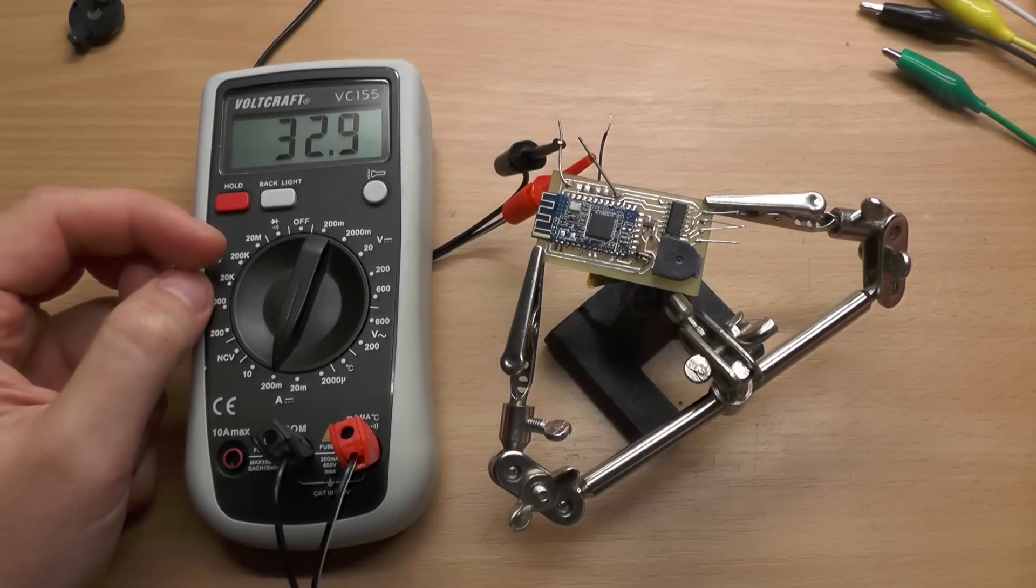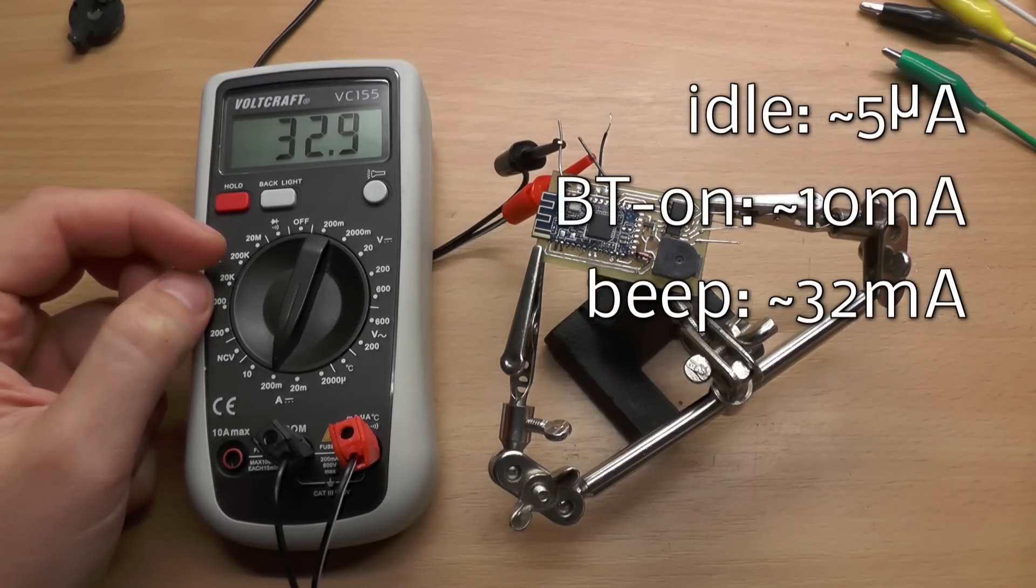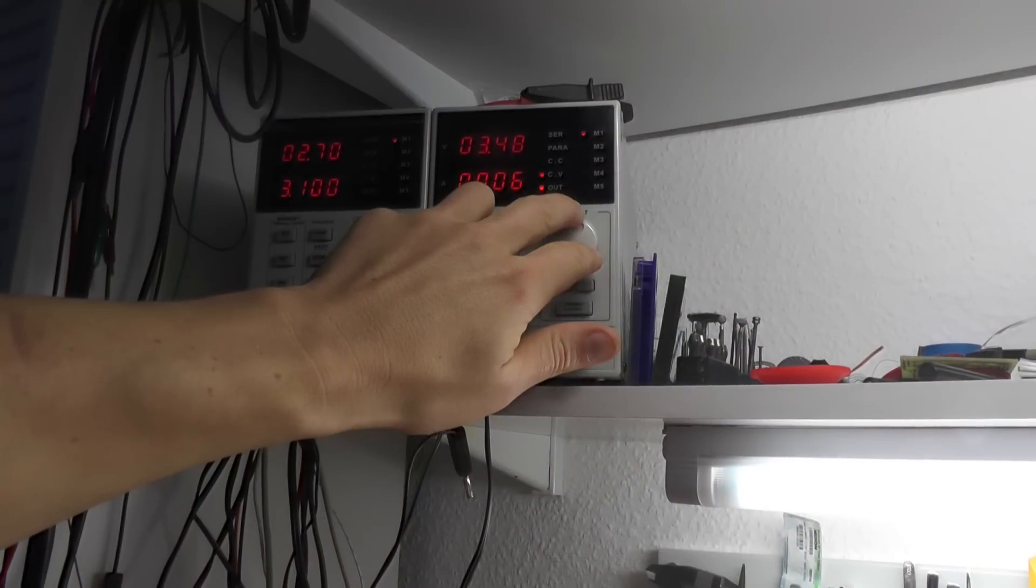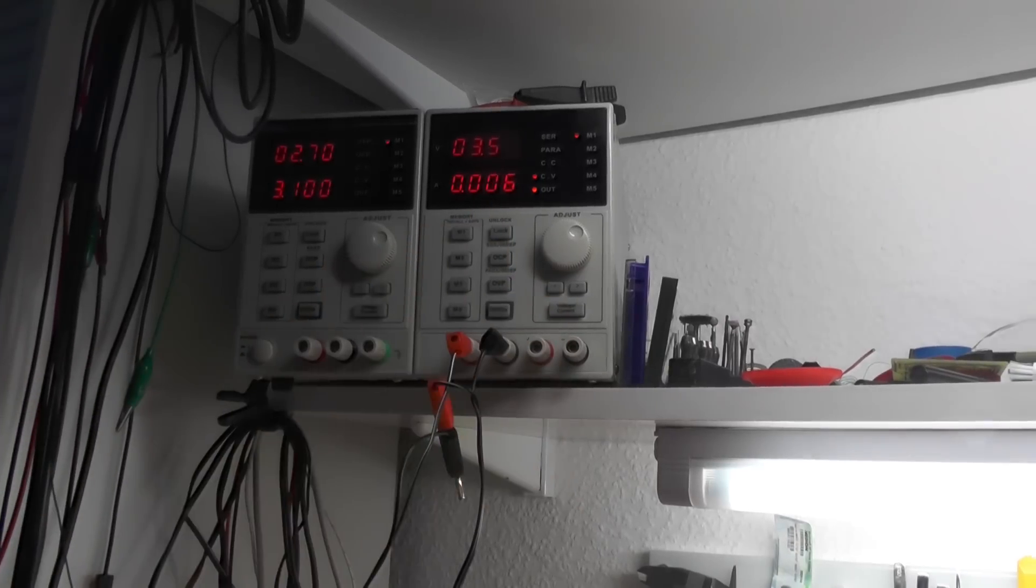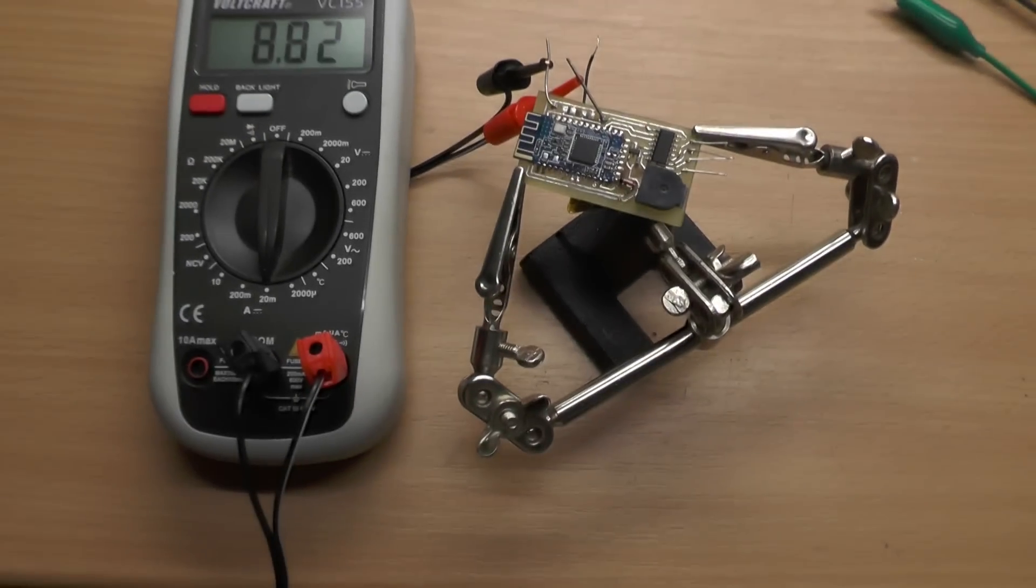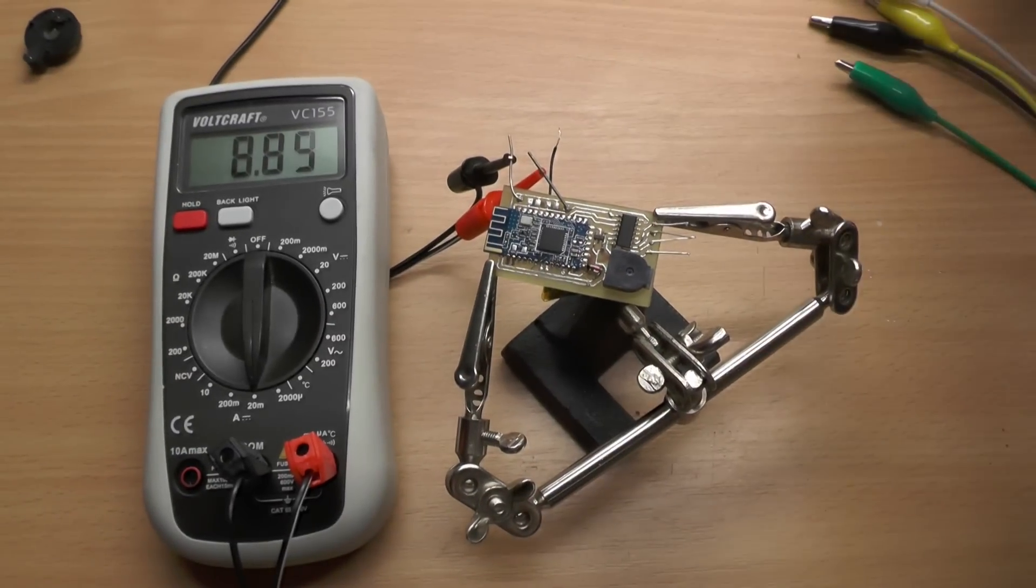The 10 milliamps while it's connected was okay but the 33 milliamps while beeping could drain the battery low before you find it and also there was the problem that at 3.5 volts the buzzer let the voltage drop so low that the ATtiny restarted.